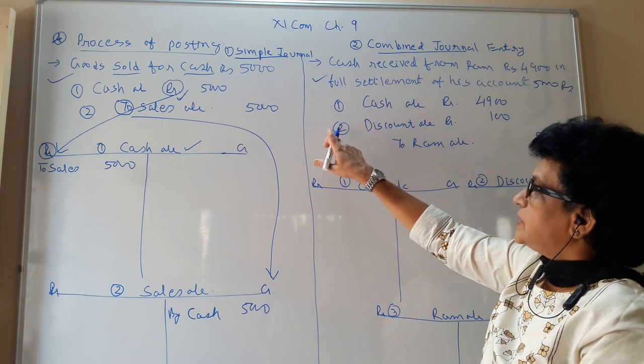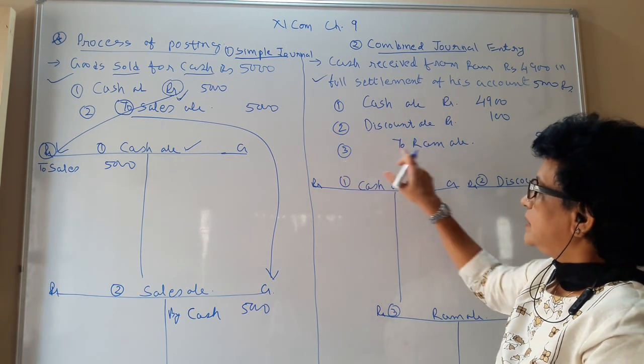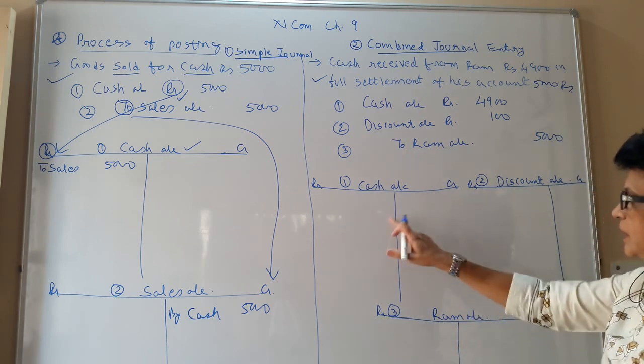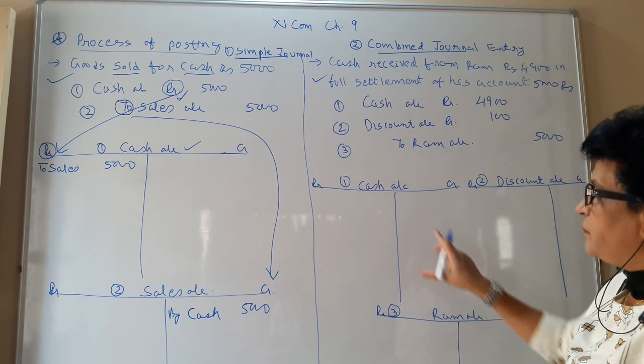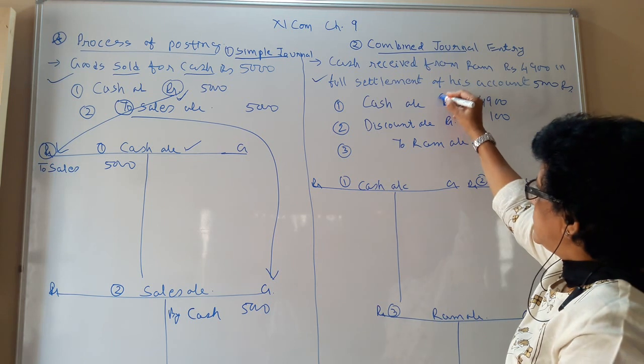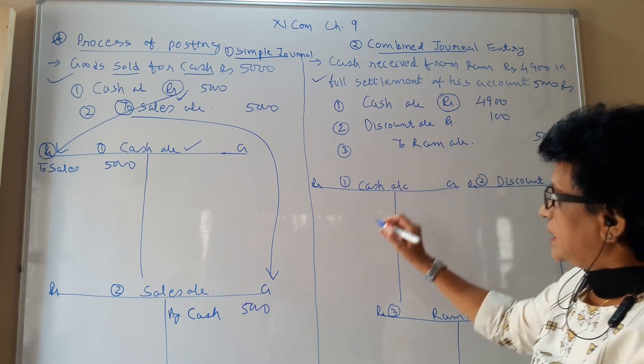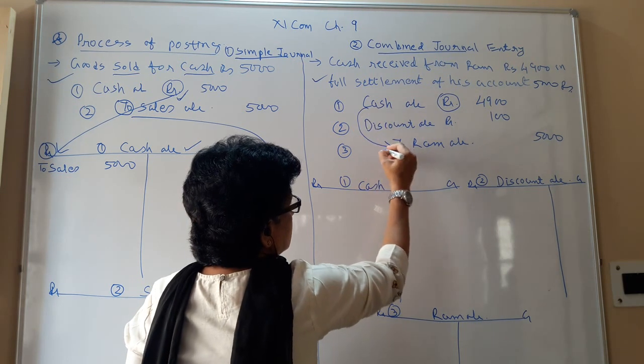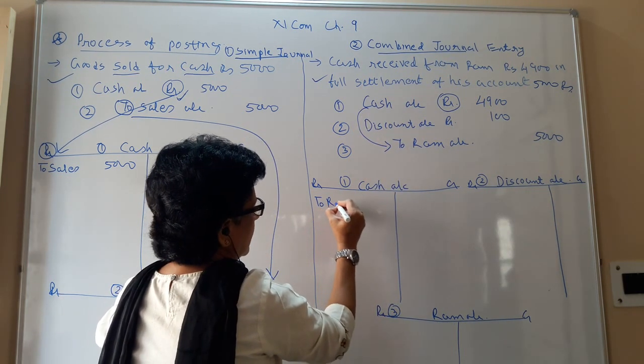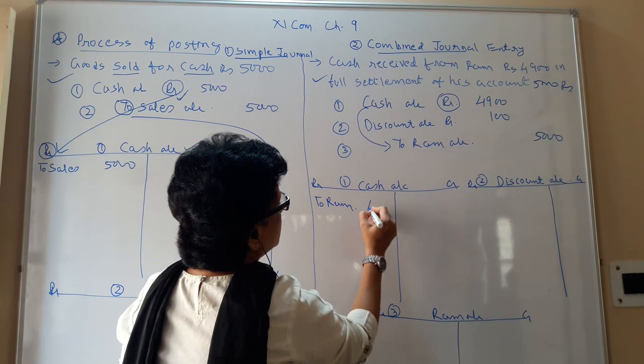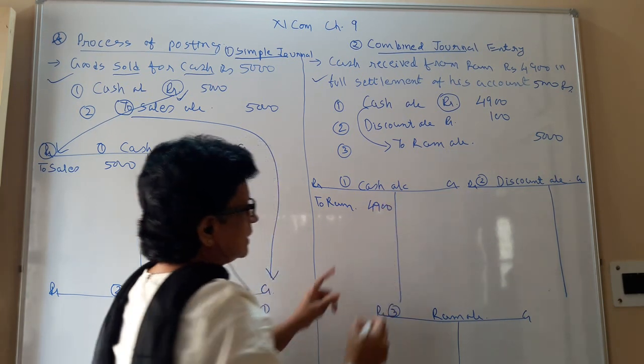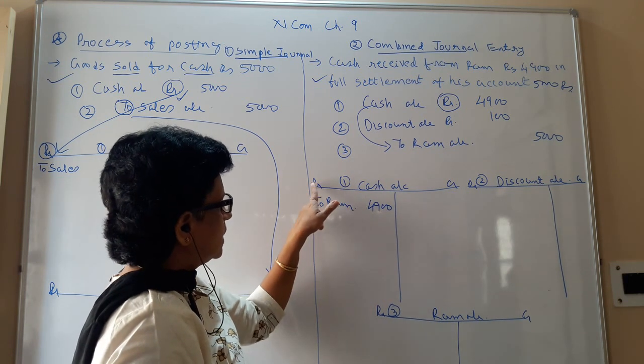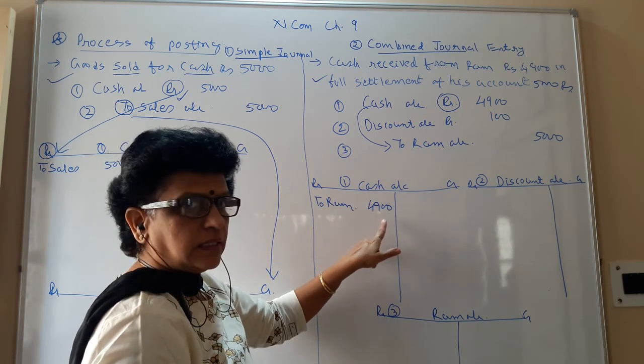And to Ram account rupees 5,000. So how many ledgers you need? One is cash, second is discount, and third is Ram. So I have drawn the three proformas: cash, discount and Ram. Now cash is to be debited. So go to the debit side of cash account. Here the opposite ledger is Ram. So to Ram, amount is rupees 4,900. You are posting on the cash account debit side 4,900.